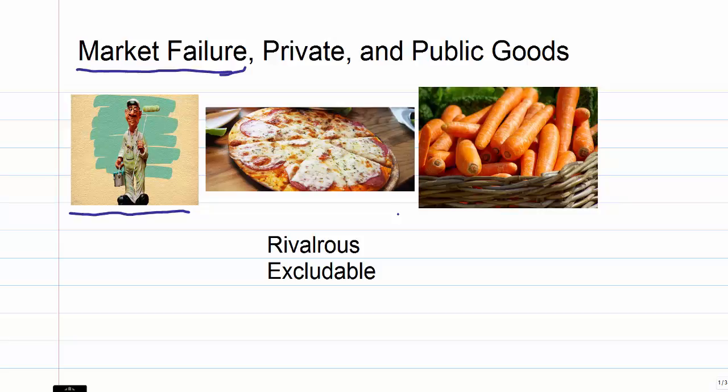And things that are private goods, things that markets work very well for people to exchange to buy and sell, have two characteristics generally. These two characteristics we say that private goods are both rivalrous and excludable. Private goods are rivalrous and excludable.